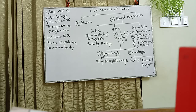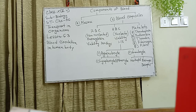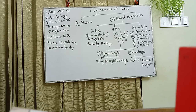Today I explained the components of blood. For board questions, there are two important topics: the first is the phagocytosis process, which is a function of WBC or white blood cells, and the second is blood clotting, which is a function of platelets. Please take these seriously. Thank you.